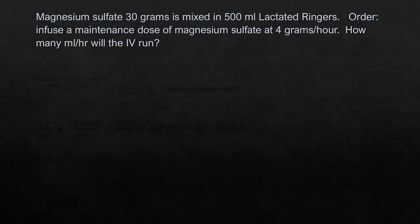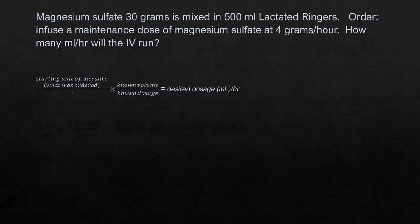Magnesium sulfate, 30 grams, is mixed in 500 milliliters of lactated ringers. The order is to infuse a maintenance dose of magnesium sulfate at 4 grams an hour. How many milliliters an hour will the IV run? We will use Dimensional Analysis to set up this problem. We're not going to use any conversions in this problem because we have grams in both the order and in what is supplied. This is what our problem looks like.